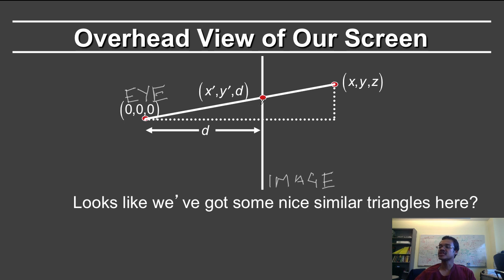That projects to some location, x prime, y prime, d. The question is, what are the coordinates of this point? So of course, the formulae for x prime and y prime are similar, we can just do one of them. The screen is assumed to be a distance d away, and the world space object is a distance z away.